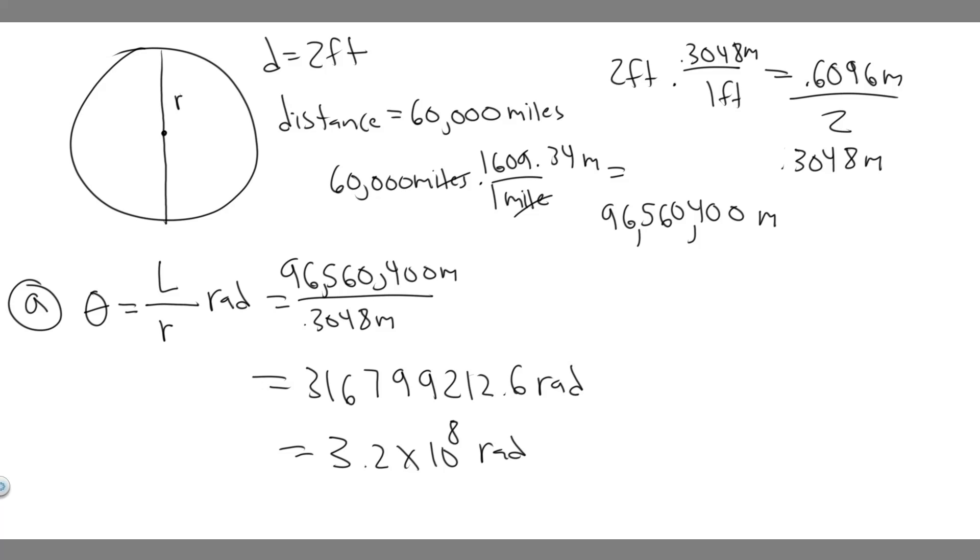So now that we've done A, let's go ahead and do B. So for B, what we're trying to do is find how many revolutions of the tire are equivalent to your answer in part A. So we're basically going to take this number and turn it into revolutions. So it's 3.2 times 10 to the 8th radians, and we want it in revolutions. So you need to know that 2 pi radians is the same as 1 revolution. So if that's the case, all you've got to do is basically divide by 2 pi.